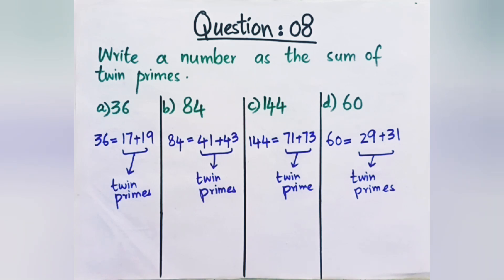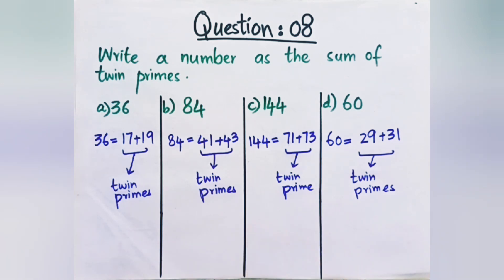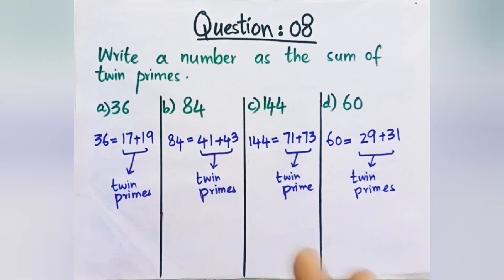The concept of twin primes is that you add or subtract 2 from a prime number and you get another prime number. So you have twin primes.